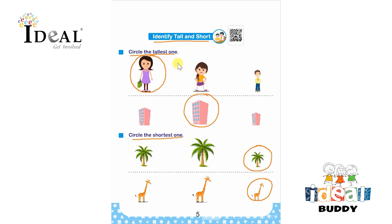First we have to identify the tallest object or tallest picture and circle it. Then we have to identify the shortest object or shortest picture and circle it to complete the worksheet. Thank you.